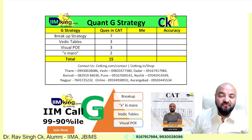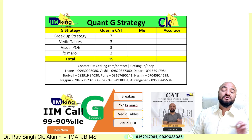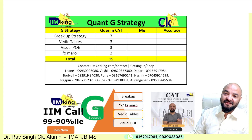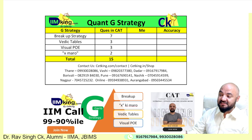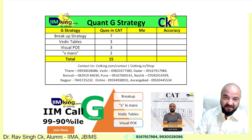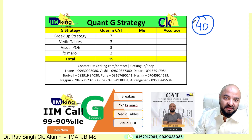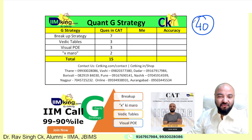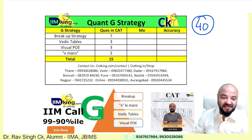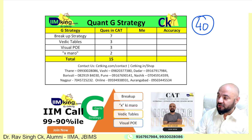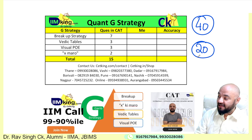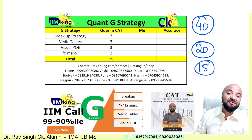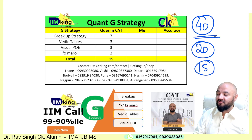Hello guys, starting from today let's make a foolproof plan for the quant section, because if quant gets you 99 percentile, a pre-party is on! Quant is the most difficult section for most students, which is why I have to give more focus on it. My target is 40 marks in the quant section. Even if you get 20 marks you'll get an IIM call easily, and if you belong to the reserved category even 15 marks plus is sufficient — but our target from now has to be 40.